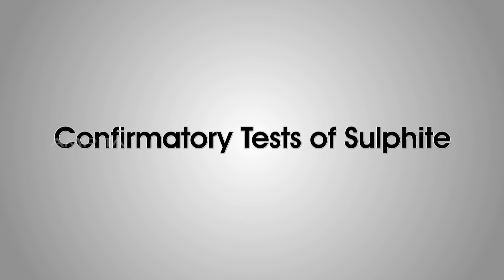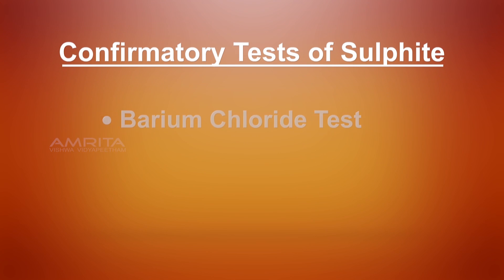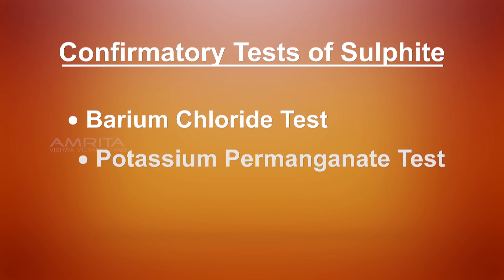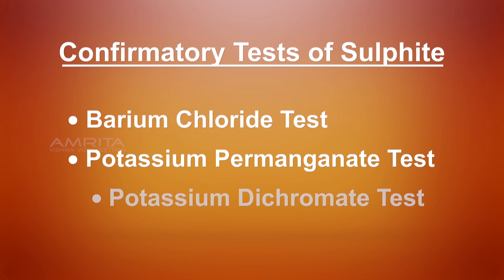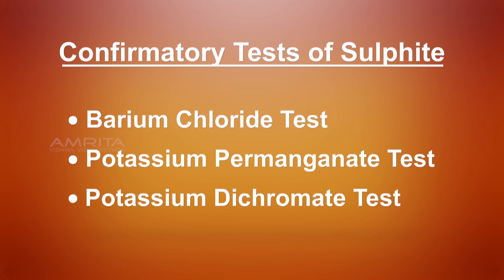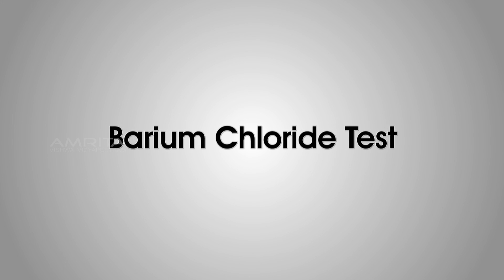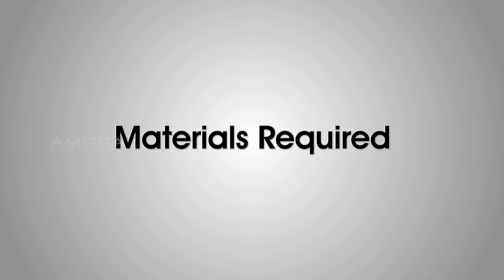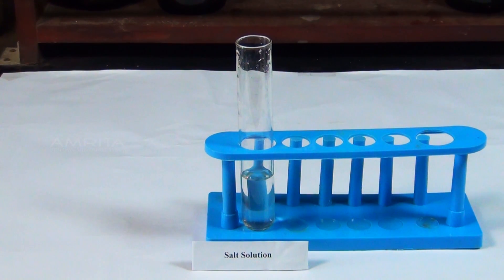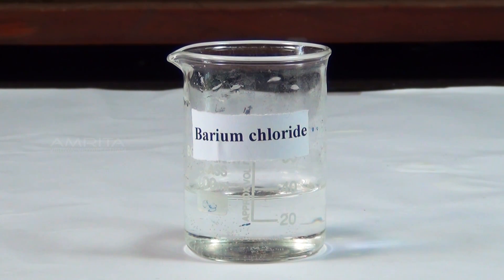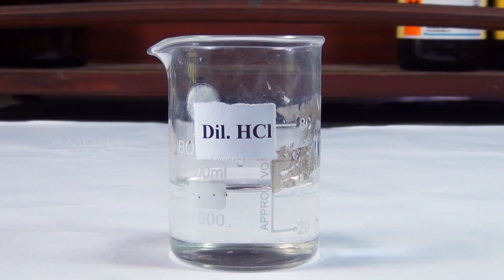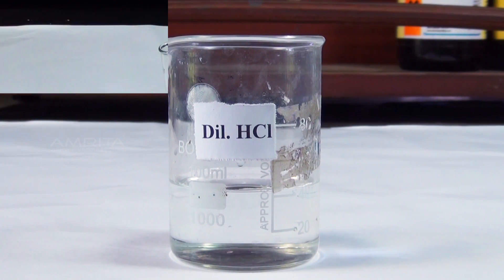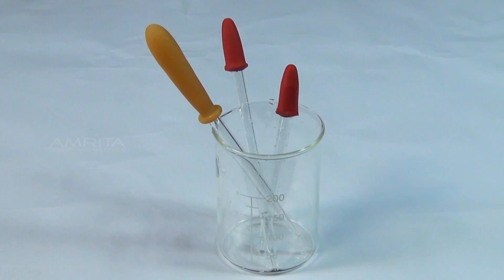Next, we look at the confirmatory tests of sulphite. The confirmatory tests are the Barium Chloride Test, Potassium Permanganate Test, and Potassium Dichromate Test. Barium Chloride Test. Materials Required: Aqueous solution of the salt, barium chloride solution, dilute hydrochloric acid, test tubes, and droppers.